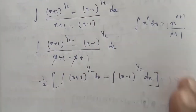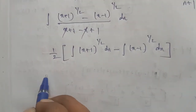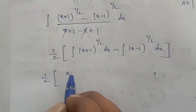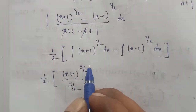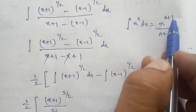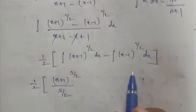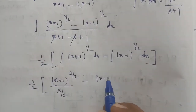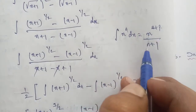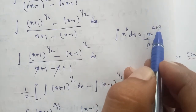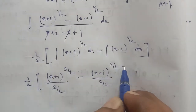Substituting n equals 1 by 2 into the formula: X plus 1 whole power of 3 by 2 by 3 by 2. Because 1 by 2 plus 1 equals 3 by 2. Similarly, for the second term, X minus 1 whole power of 1 by 2: substituting n equals 1 by 2, so 1 by 2 plus 1 equals 3 by 2. So the result is X minus 1 whole power of 3 by 2 by 3 by 2.